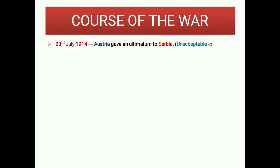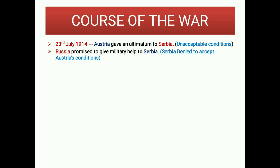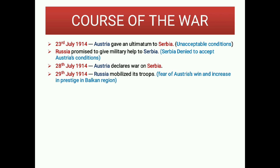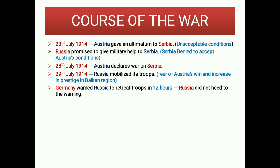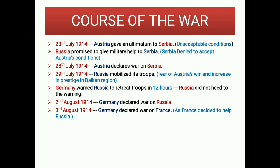Course of the war: On 23 July 1914, Austria gave an ultimatum to Serbia with unacceptable conditions. Russia promised military help to Serbia, so Serbia denied accepting Austria's conditions. On 28 July 1914, Austria declared war. Russia mobilized its troops fearing Austria's growing prestige in the Balkans. Germany warned Russia to retreat troops within 12 hours. Russia did not heed the warning, so on 2 August 1914 Germany declared war on Russia.